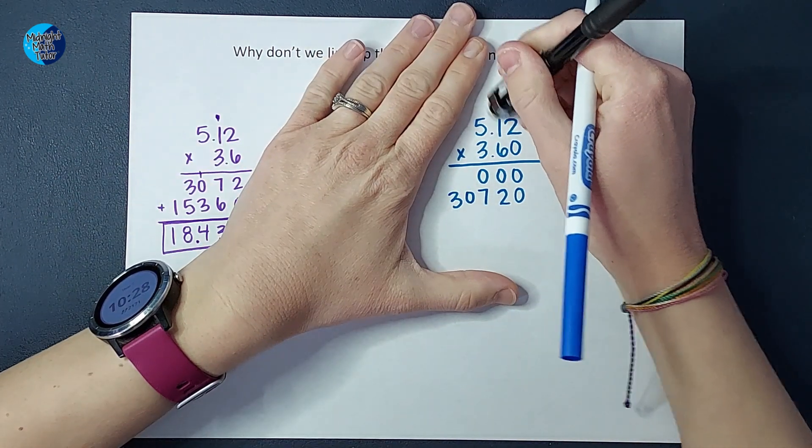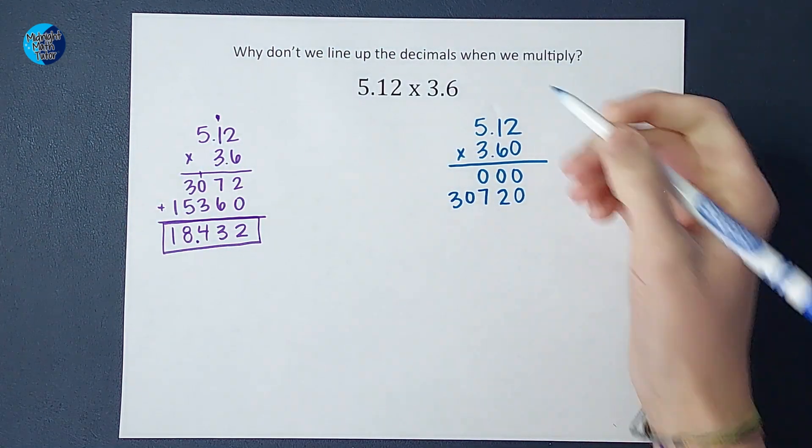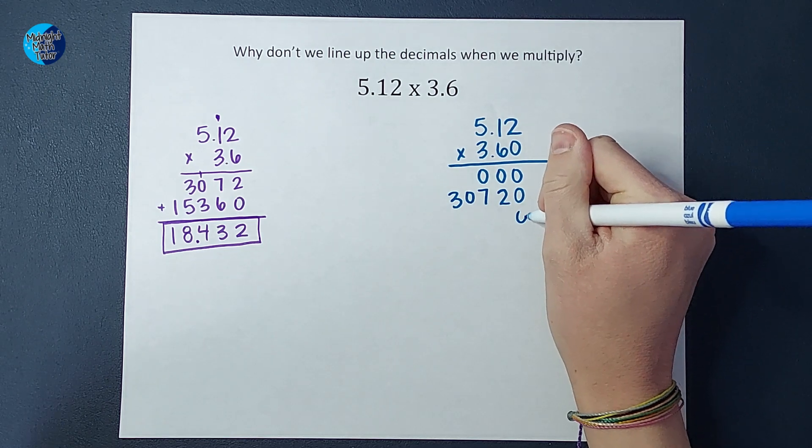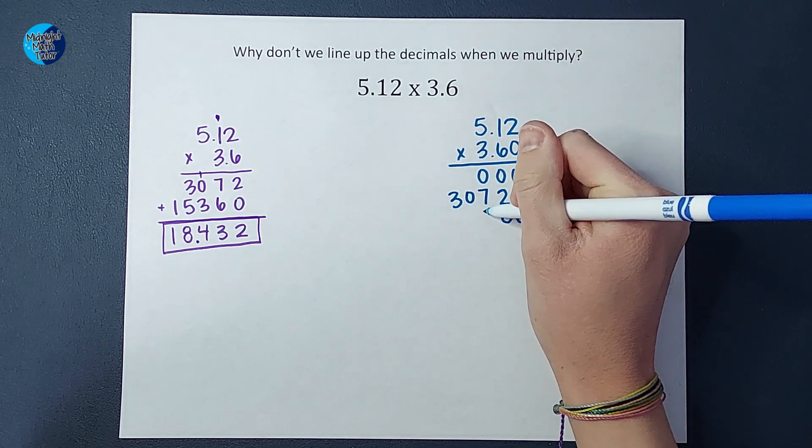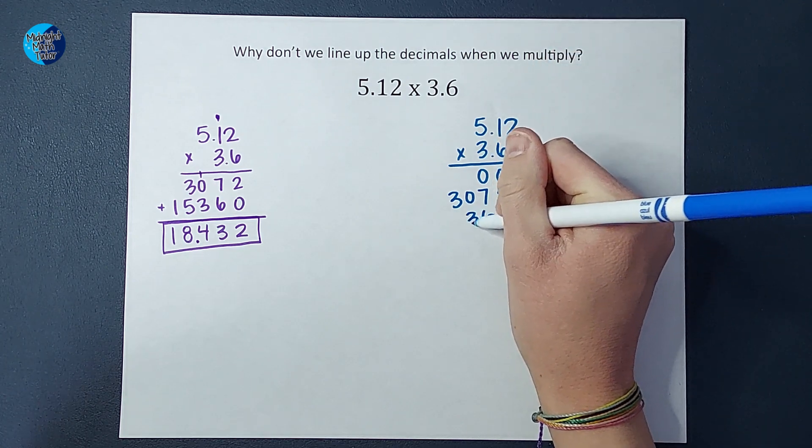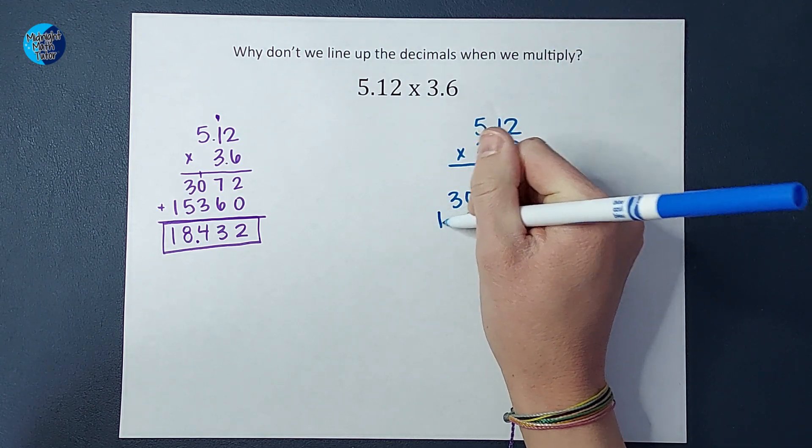And six times five gives me 30. See, now I can just erase this guy instead of scribbling him out like over here. And then I need to do my two placeholders. Three times two gives me six. Three times one gives me three. And three times five gives me 15.